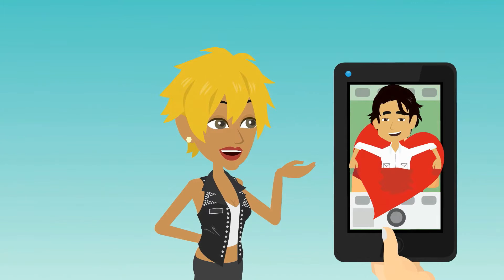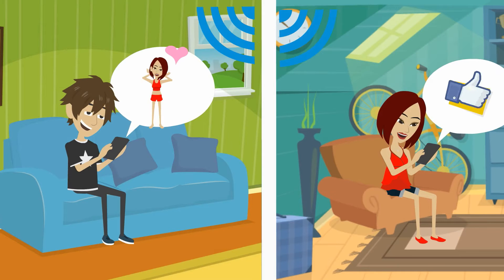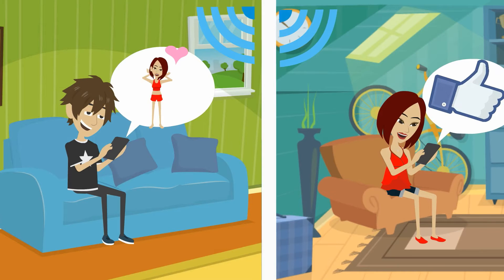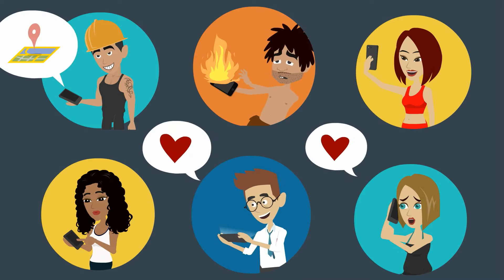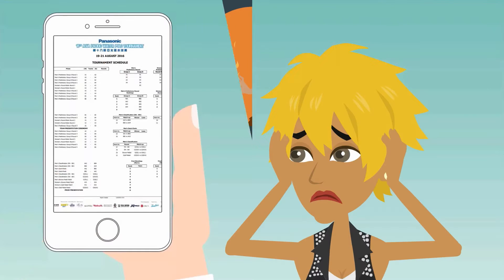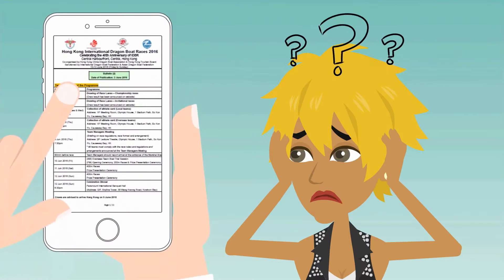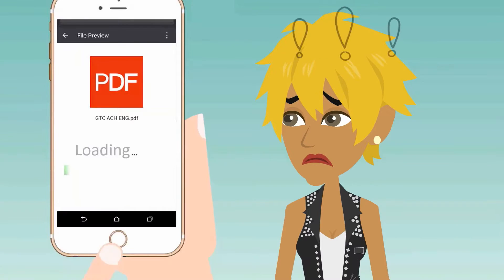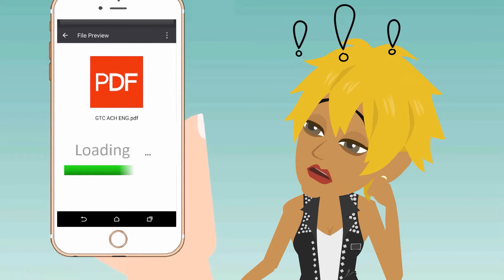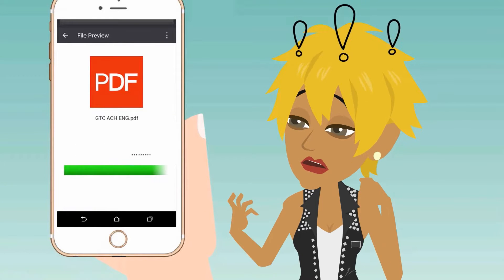We all love our phones for online chat, photo sharing, and other stuff. But when it comes to reading tables or lists, which usually arrive as attachments, the experience can be really annoying.